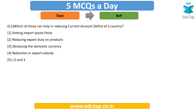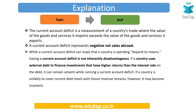Question 5: Which of these can help in reducing the current account deficit of a country? Options: setting import quota limits, reducing export duty, reducing export subsidy, devaluing the domestic currency, or options 1, 2, and 3. Current account deficit occurs when the value of imports made by a country exceeds the value of exports, meaning the country has paid more for imports than it has earned through exports.